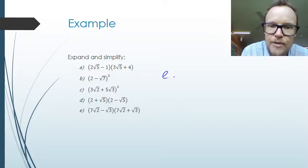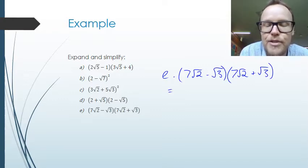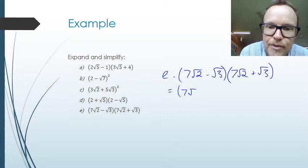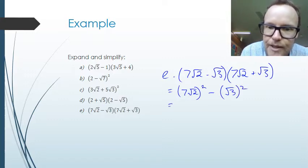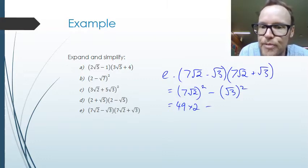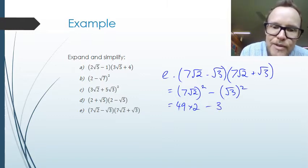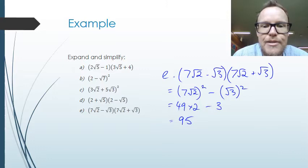For part E, we have 7 root 2 minus root 3 times 7 root 2 plus root 3. This is another difference of perfect squares, so going straight to that: 7 root 2 all squared minus root 3 squared. Squaring 7 root 2 means squaring all components — 7 squared is 49 and root 2 squared is 2 — and root 3 squared is just 3. So 49 times 2 is 98, and 98 minus 3 is 95. The answer is 95.